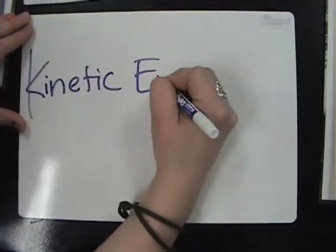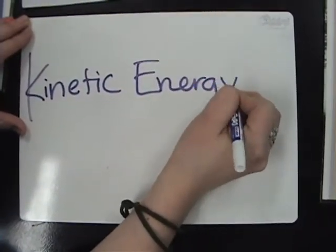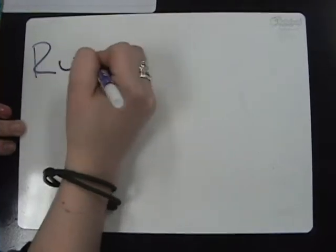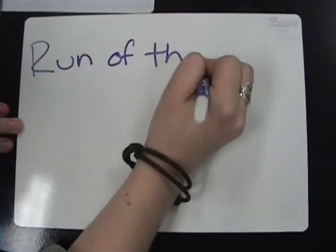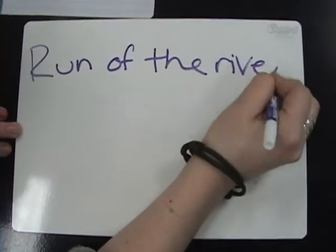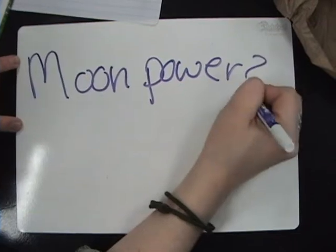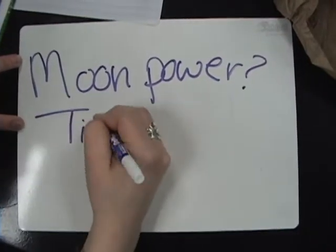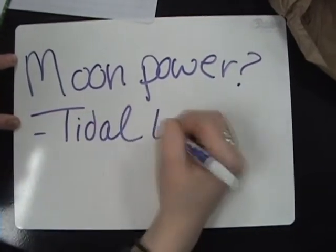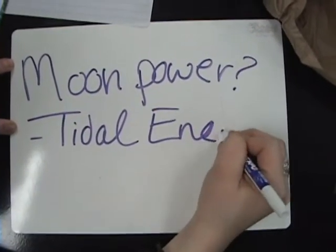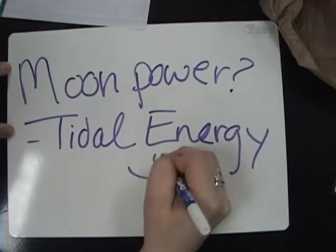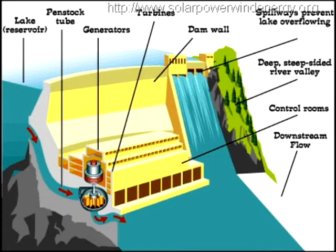The most common approaches to generating hydroelectricity are run-of-the-river and tidal energy. Hydroelectric power plants capture the kinetic energy and use it to turn a turbine. The amount of electricity generated depends on the flow rate and the vertical distance.